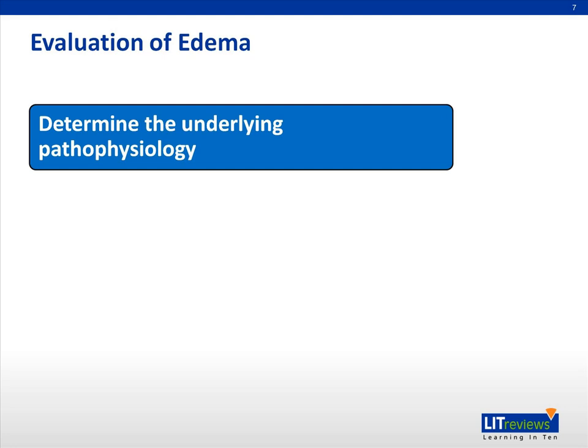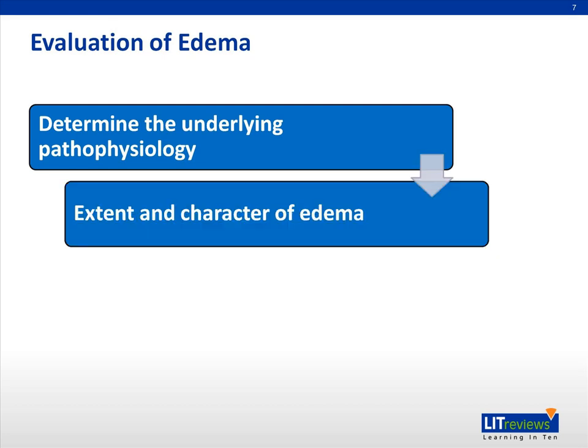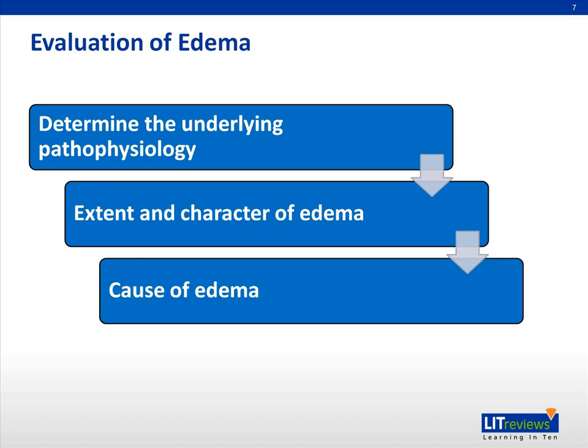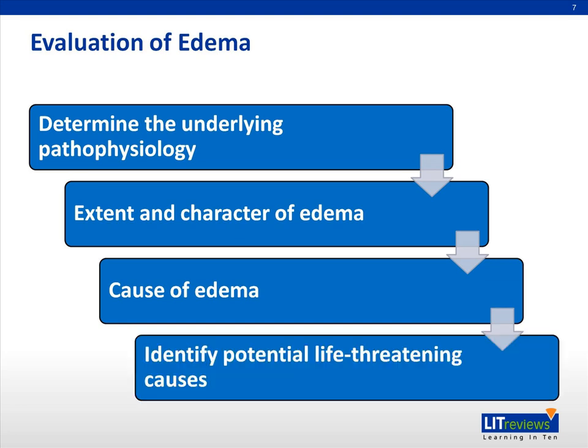When approaching an edematous child, it is useful to determine which mechanism is the main pathophysiology for the patient. The extent and character of the edema can also help us categorize and hence guide the investigations to find out the cause of the edema. An important note is that we should always identify potential life-threatening causes and institute early treatment.